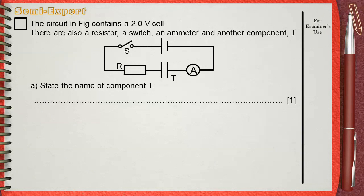The circuit in figure contains a 2 volt cell. There are also a resistor, a switch, an ammeter, and another component T. State the name of component T.